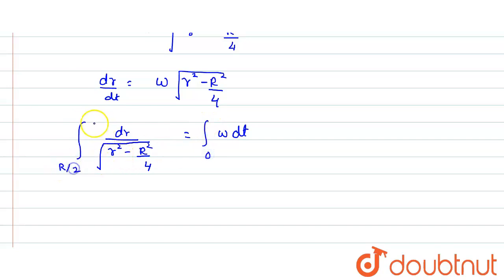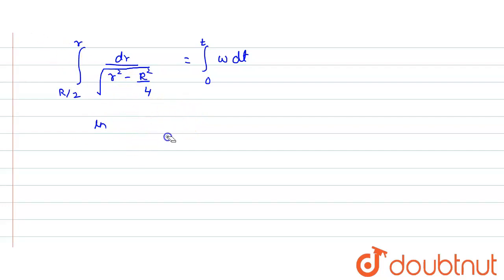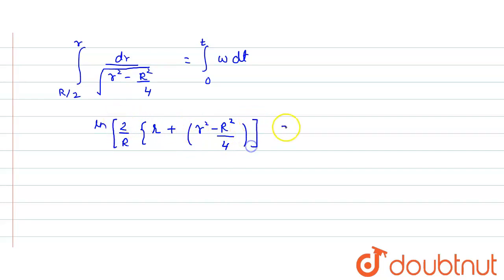At t = 0 the radial location is R/2, and at time t it is r. This integral is of the form ∫ dx/√(x² − a²), whose result is in terms of logarithm. After evaluating the limits, the answer becomes ln(2r/R + √(4r²/R² − 1)) = ωt, which can be written as ln[(2r + √(4r² − R²))/(R)] = ωt.